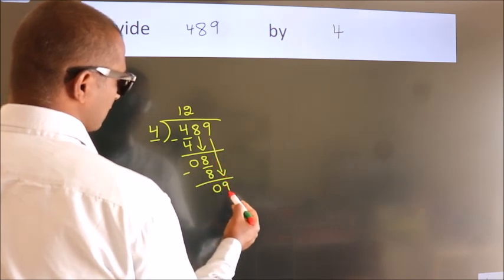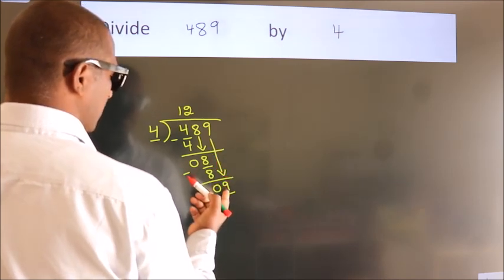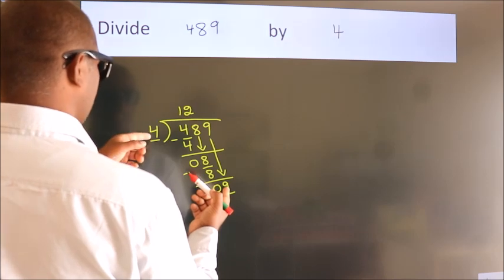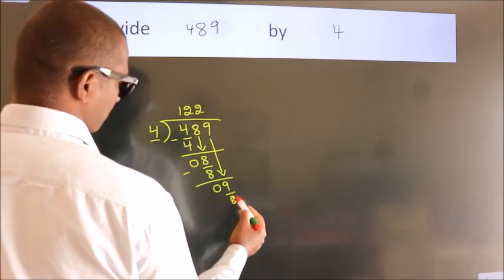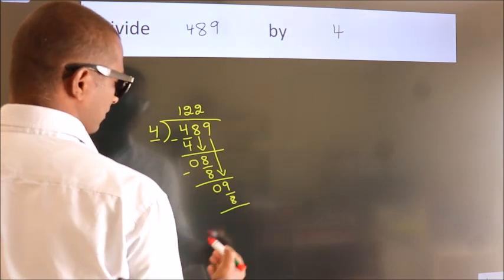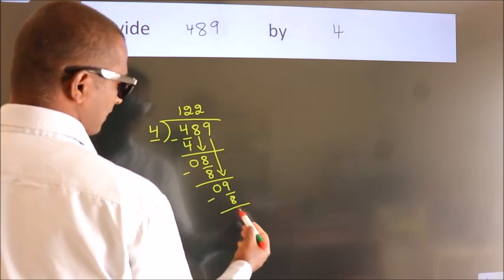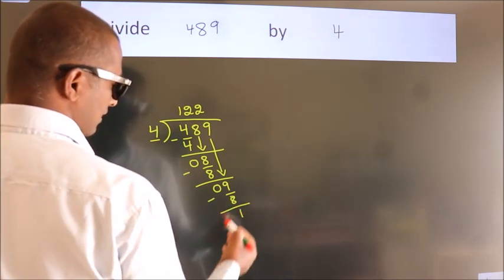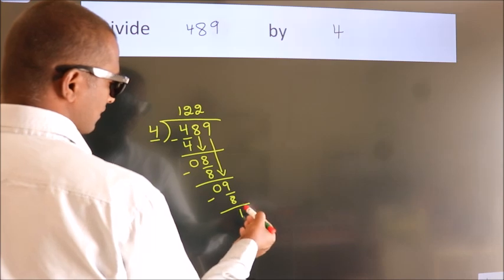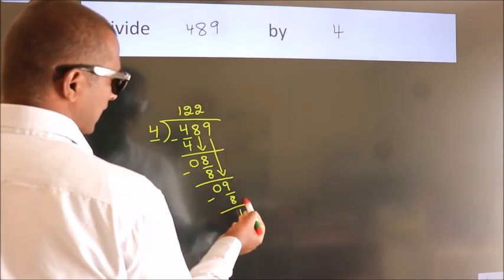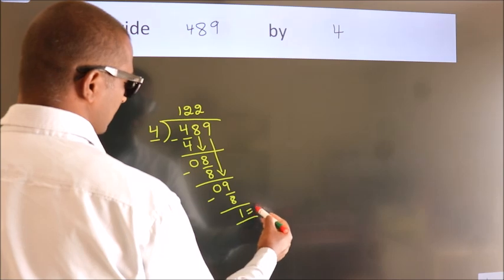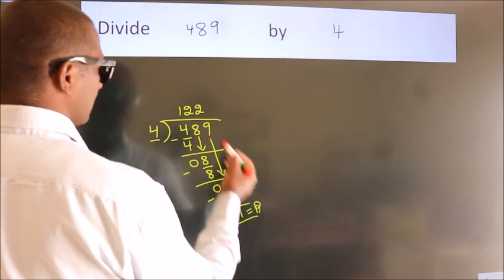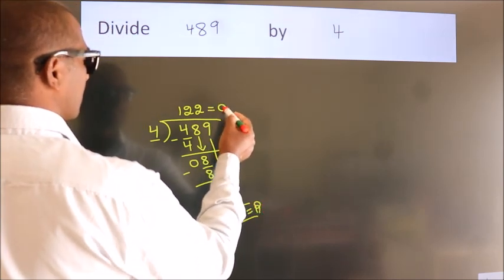So now we have 9. A number close to 9 in the 4 table is 4 twos — 8. Now we subtract, and we get 1. After this, there are no more numbers to bring down, so we stop here. This 1 is our remainder, and this is our quotient.